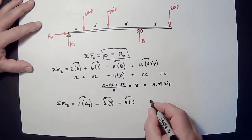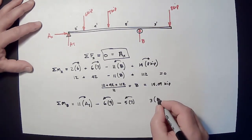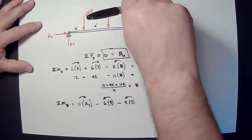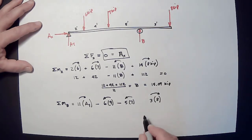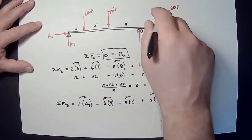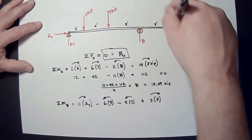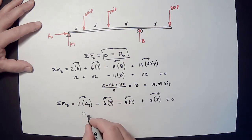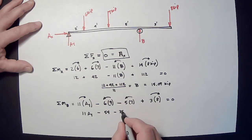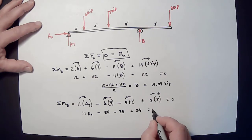And then, I've got a three-foot moment arm times eight kips. And it's causing rotation this way. That means it's positive. The same as the 11AY. Those all equal zero. So, 11AY minus 54 minus 35 plus 24 equals zero.